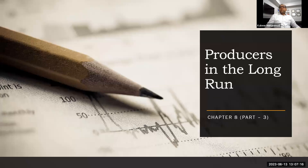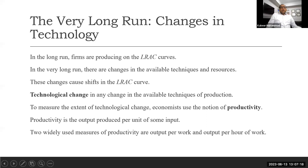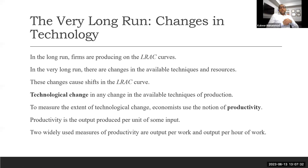In the long run, firms are producing on the long run average total cost curves, as we discussed in part two. But in the very long run — meaning about 40, 50 years or even a century — there are changes in available techniques and resources. Resources are changing, techniques are changing, and the way humans interact with machines is changing. These changes will shift the long run average total cost curve up or down.